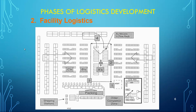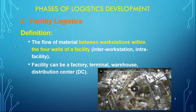Managers started looking at logistics from a broader point of view due to the interaction between different workplace stations. That moved logistics from the workstation level to a facility or plant level. Facility logistics is defined as the flow of material between workstations within the four walls of a facility — what we call inter-workstation, intra-facility. A facility can be a factory, terminal, warehouse, or distribution center.